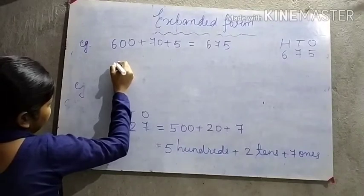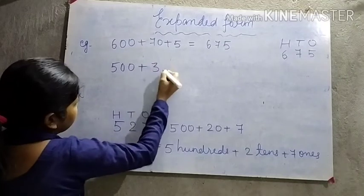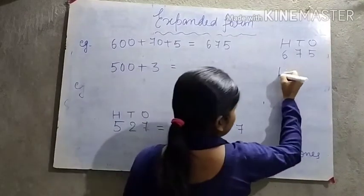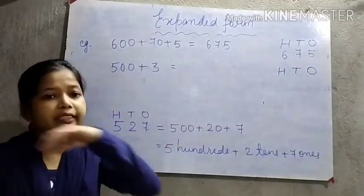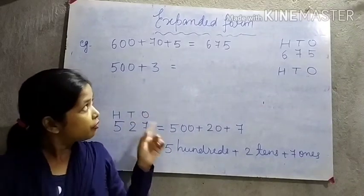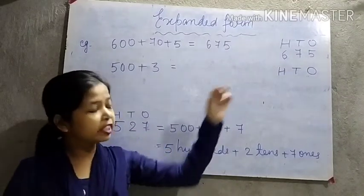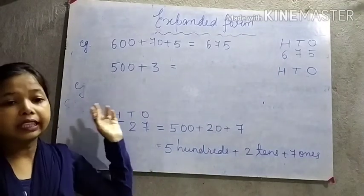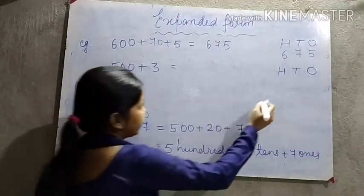We will take one more example: 500 plus 3. Look at the example, children — 500 plus 3. First, we will assign its position: hundreds, tens, and ones. 500 comes under hundreds, so we write here only 5.